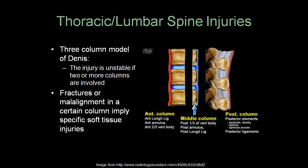The three-column model of Denis divides the thoracic and lumbar spine into three columns. The anterior column includes the anterior two-thirds of the vertebral body. The middle column includes the posterior one-third of the vertebral body. The posterior column includes the posterior elements. The injury is considered unstable if two or more columns are involved. Fractures imply specific soft tissue injuries: anterior longitudinal ligament and anterior annulus in the anterior column; posterior annulus and posterior longitudinal ligament in the middle column; and posterior ligaments in the posterior column. These soft tissues cannot be seen on x-rays.